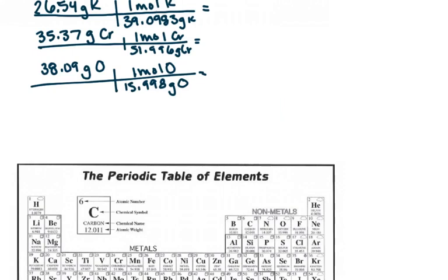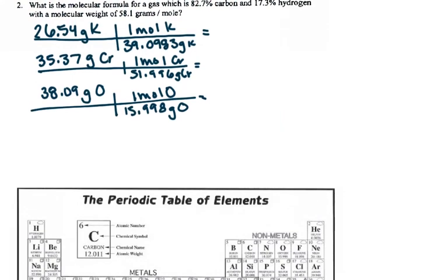I'm going to put these into the calculator. When I divide those two values for potassium, I get 0.67880 moles. The next one, chromium, is 0.68024 moles of chromium. And then finally for oxygen, we have 2.38092 moles of oxygen.